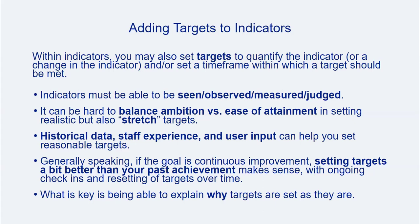If desirable, a target can also be added to an indicator embedded in an outcome. Target setting can be tricky for a number of reasons. First, targets must be able to be observed in some way. Second, setting a reasonable target can be hard. Finding the Goldilocks—that is, not too easy and not too hard—of targets is challenging. Historical data, if it exists, can be helpful to get a sense of what a reasonable target might be, and setting a stretch goal means setting the target as a bit more than normal. Without historical data, staff experiences and observations or input from users are also incredibly helpful for setting reasonable targets. Whatever targets are initially set, they can be updated in subsequent rounds of assessment. The key, for the first time, is to be able to explain why the targets are set as they are. After that, past observations will help you set new targets.